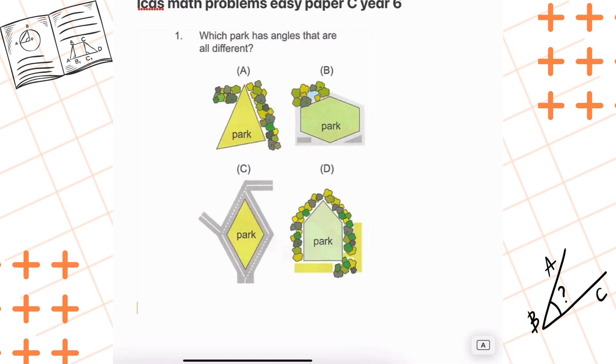A, B, C and D. Let's check each one and figure out which park has angles that aren't all the same.